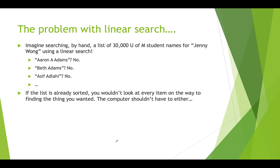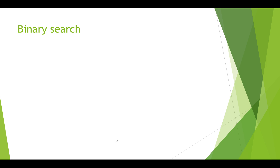Imagine we're searching through the entire list of University of Manitoba student names — 30,000 — looking for a student named Jenny Wong. We start at the beginning: the first student is Aaron Adams, is that Jenny Wong? No. Beth Adams? No. Asif Adlahi? No. Jenny Wong, if this list is alphabetized by last name, is going to be way at the end of the list. Doing a linear search one by one is going to be super slow. If we have a list that's already sorted, it just wouldn't make sense to do this. Think about a stack of papers — if you're looking for something you put in a long time ago, you'd look at the bottom, not the top. So we want to be smarter about how we search a sorted list, and that's what binary search does.